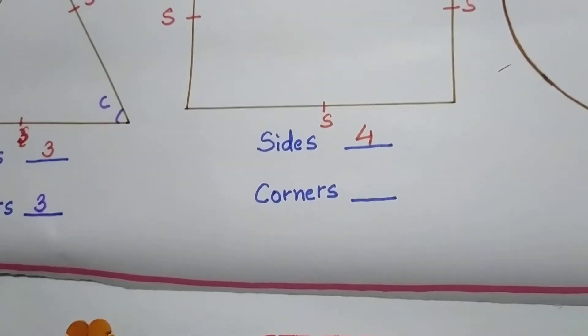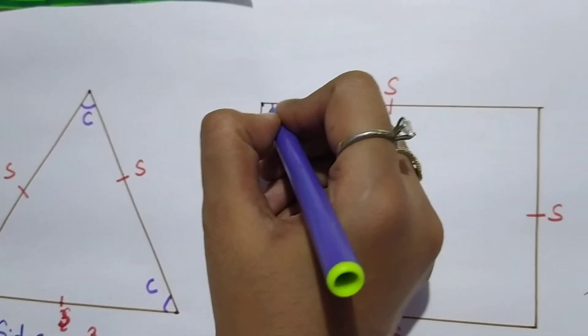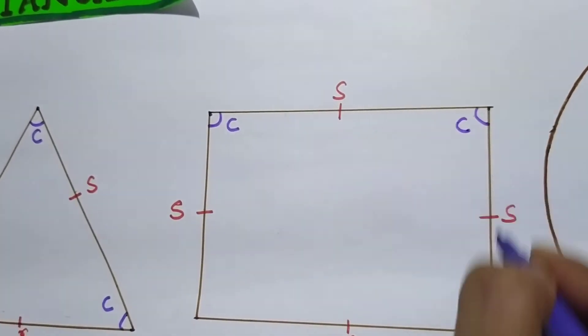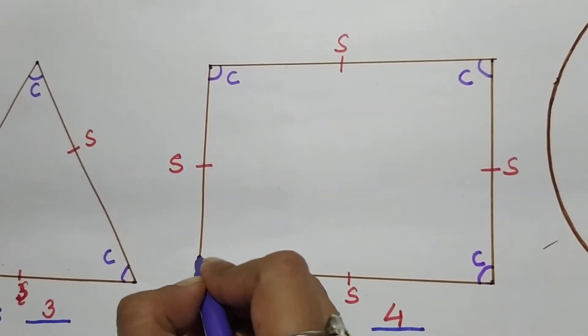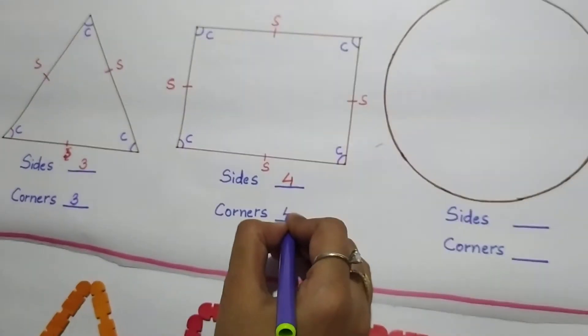Now let us count the corners. How do we count the corners? Start from here. One, this is two, this is three and this is four. So how many corners are there in a rectangle? Four.